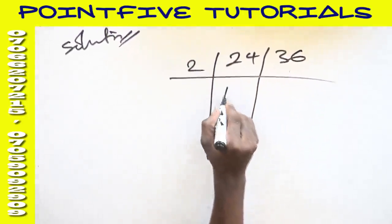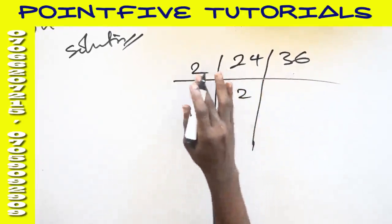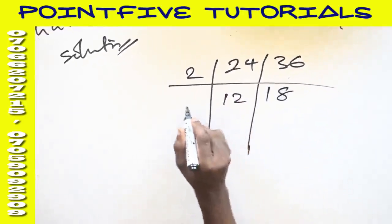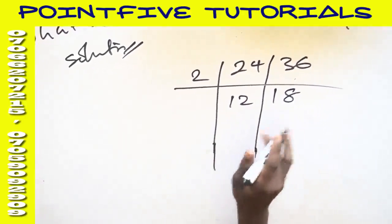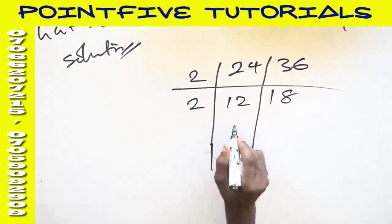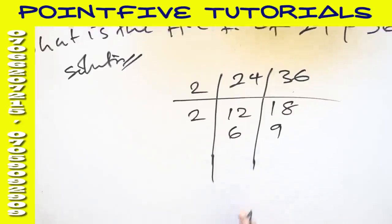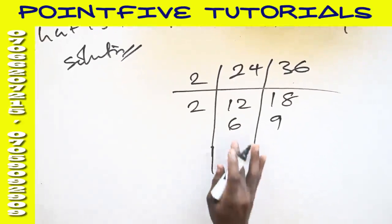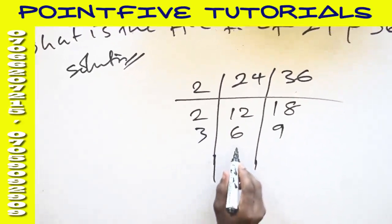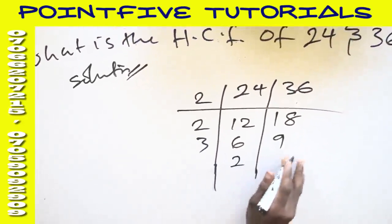24 divided by 2 will give you 12. 36 divided by 2 is 18. You look for a number that must divide these two numbers. 2 can go. This here is 6, 9. You look for a number that must divide this. 3 can go. 3 here, we have 2. 3 here, 3.